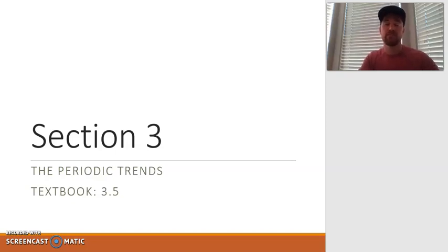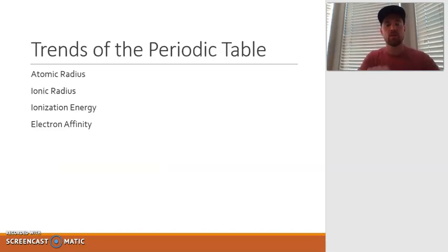Now that we have a good understanding of the effect of nuclear charge and the shielding effect, that's going to help us with section 3, which are the periodic trends. There are four periodic trends that we're going to discuss: atomic radius, ionic radius, ionization energy, and electron affinity.